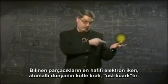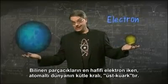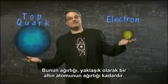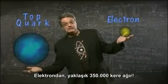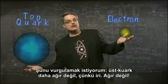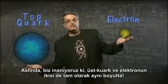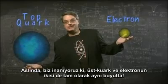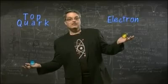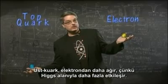The lightest of the familiar subatomic particles is the electron, while in the subatomic world, the king of mass is the top quark. It weighs about as much as an entire atom of gold, about 350,000 times more than the electron. The top quark is not more massive because it's bigger — in fact, we believe that both the top quark and the electron are exactly the same size. Indeed, they both have zero size. The top quark is more massive than the electron simply because it interacts more with the Higgs field. If the Higgs field didn't exist, neither of these particles would have any mass at all.